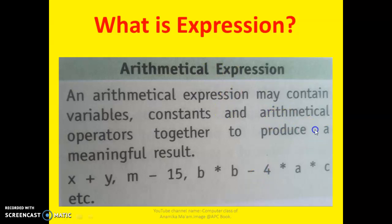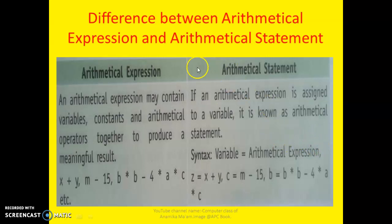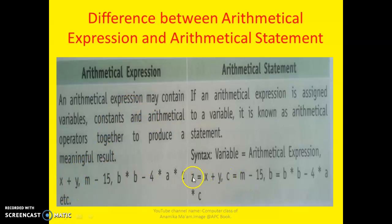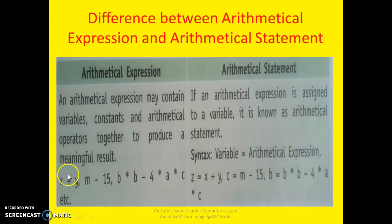Now come to the next slide. What is the difference between an expression and an assignment statement? It is very easy. In an expression, only one side is there. But in an assignment statement, there are two sides — left-hand side and right-hand side. For example, Z equal to X plus Y is an assignment statement. But only one side, X plus Y, is called an expression. When after calculating X plus Y we want to store it in some variable, then this is called an assignment statement.